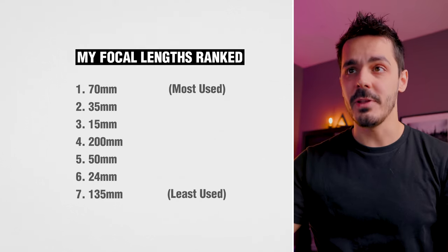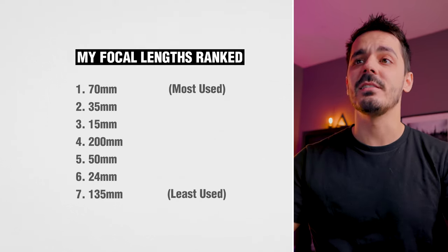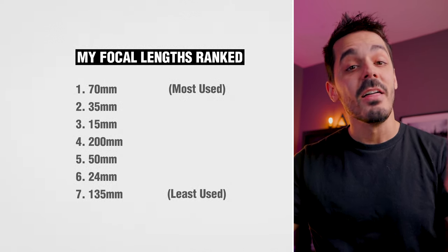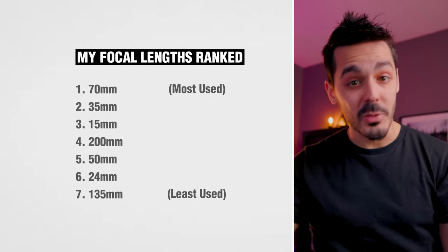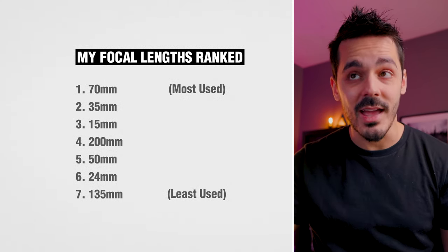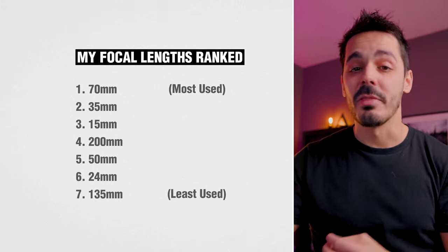It does seem like 70 and 35 are my two most popular, but going down the rest of the list you'll notice that the focal lengths you'd normally find in prime lenses are the numbers I shoot with a lot: 35, 15, 200, 50, then 24 — which is another prime you can get — and 135.